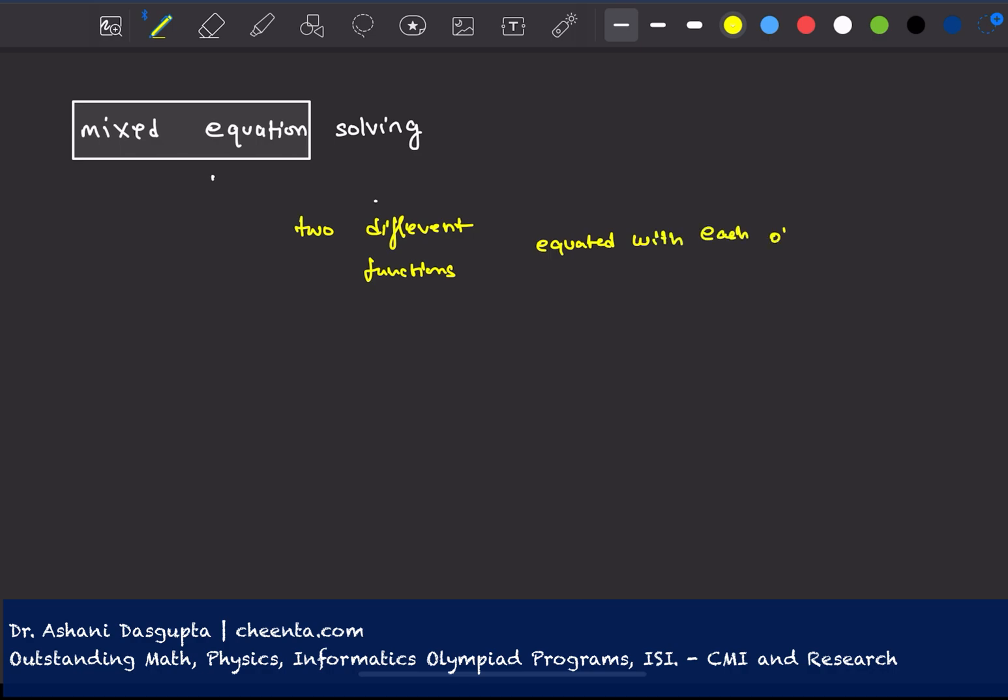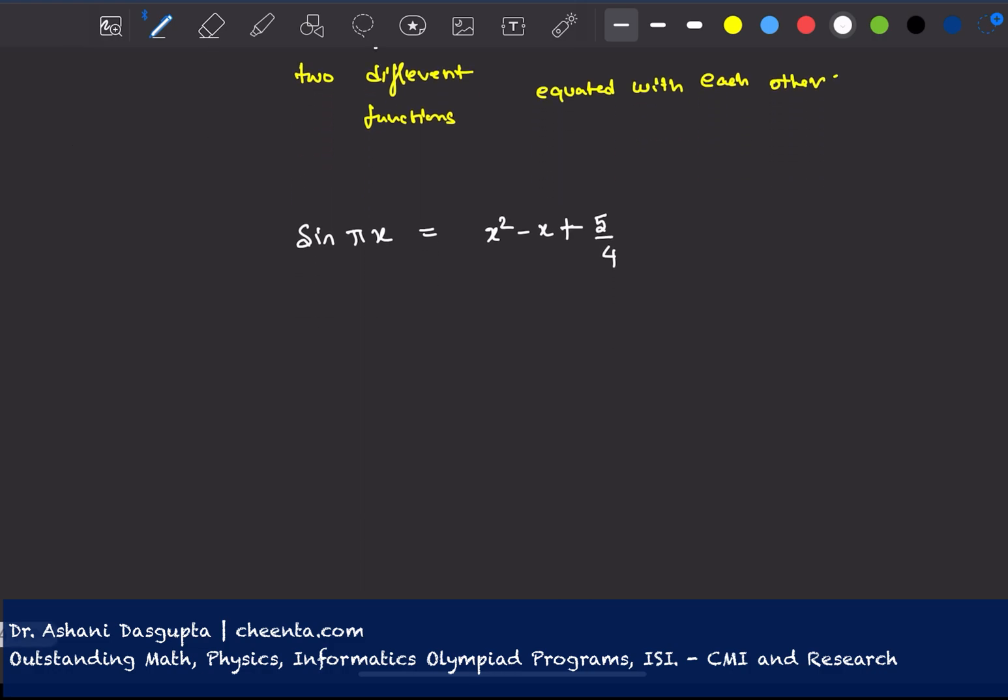So in this particular example, the problem says that we want to find out the value of x such that sin of pi x is equal to x square minus x plus 5 over 4.